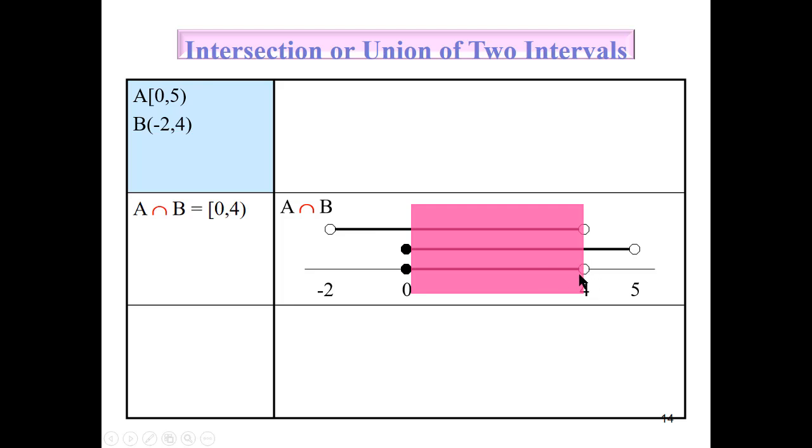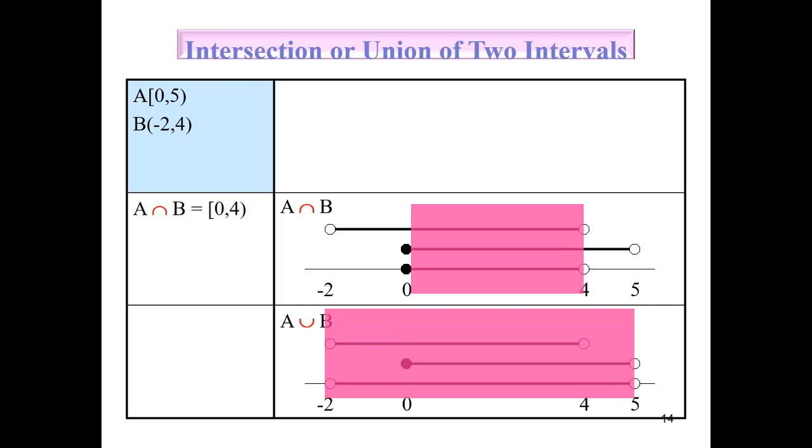Next if we have A union B, so A is between 0 to 5 and then B. We have to take all of it because it's union. So it's between negative 2 until 5, and it's a round bracket.